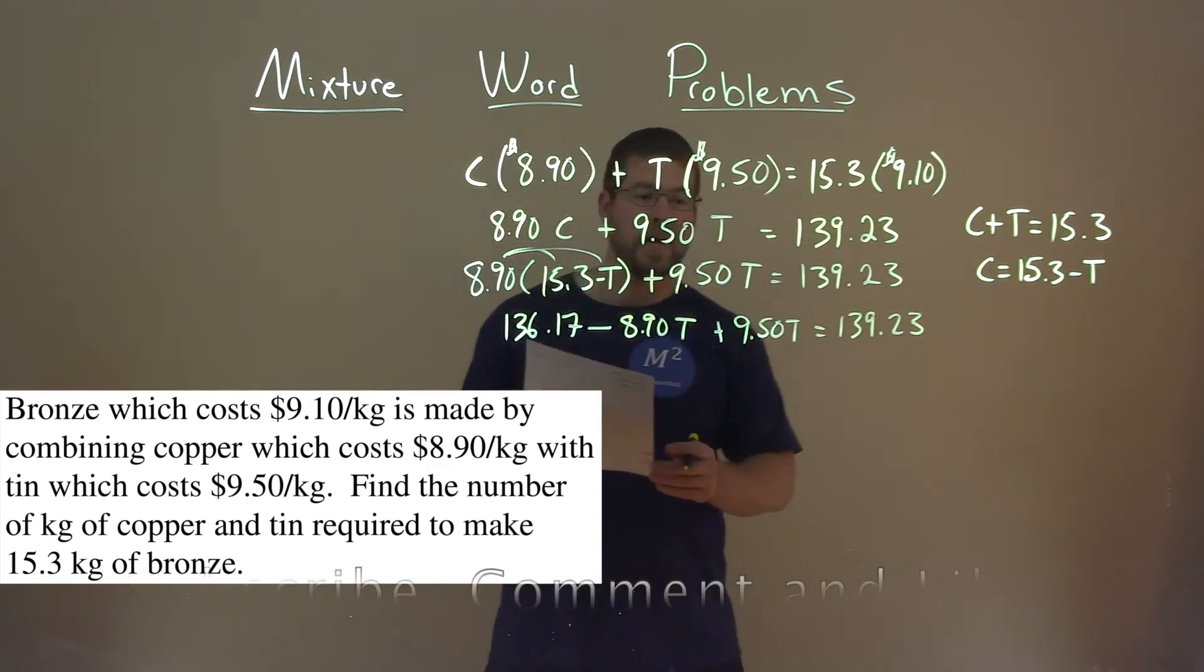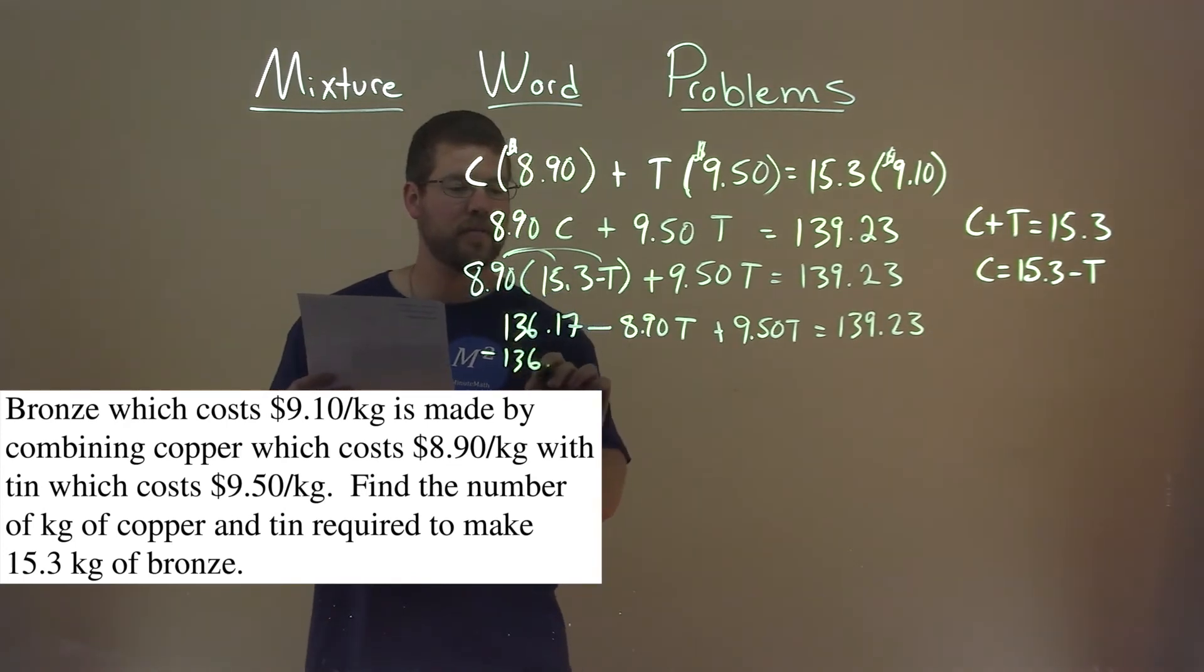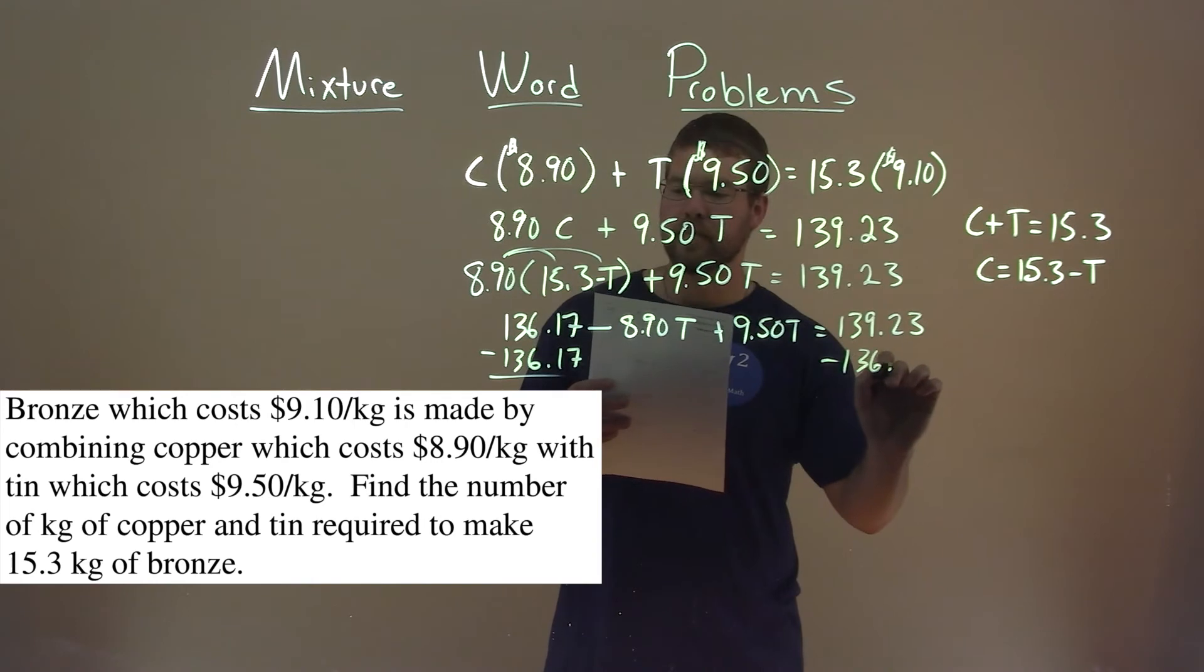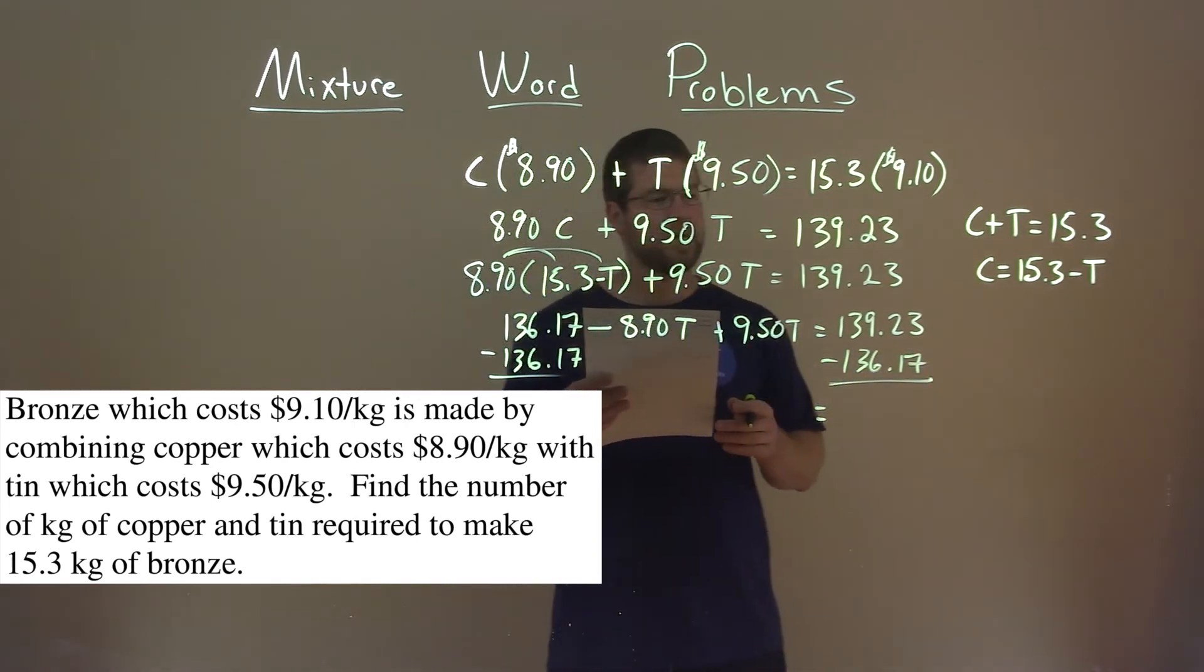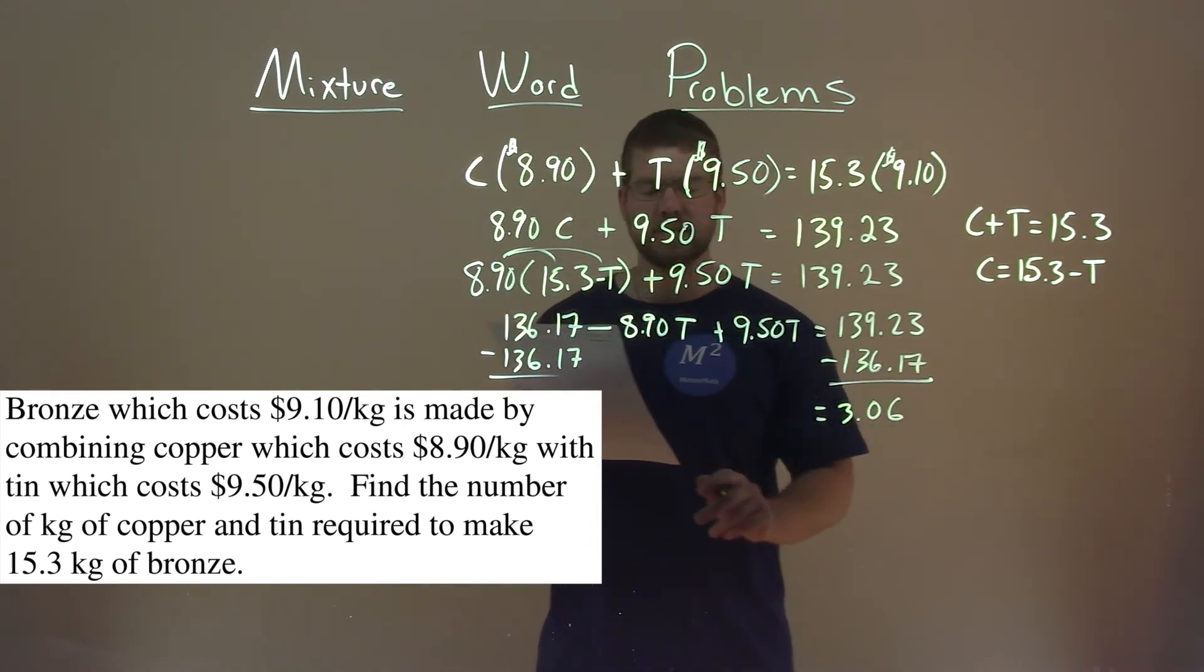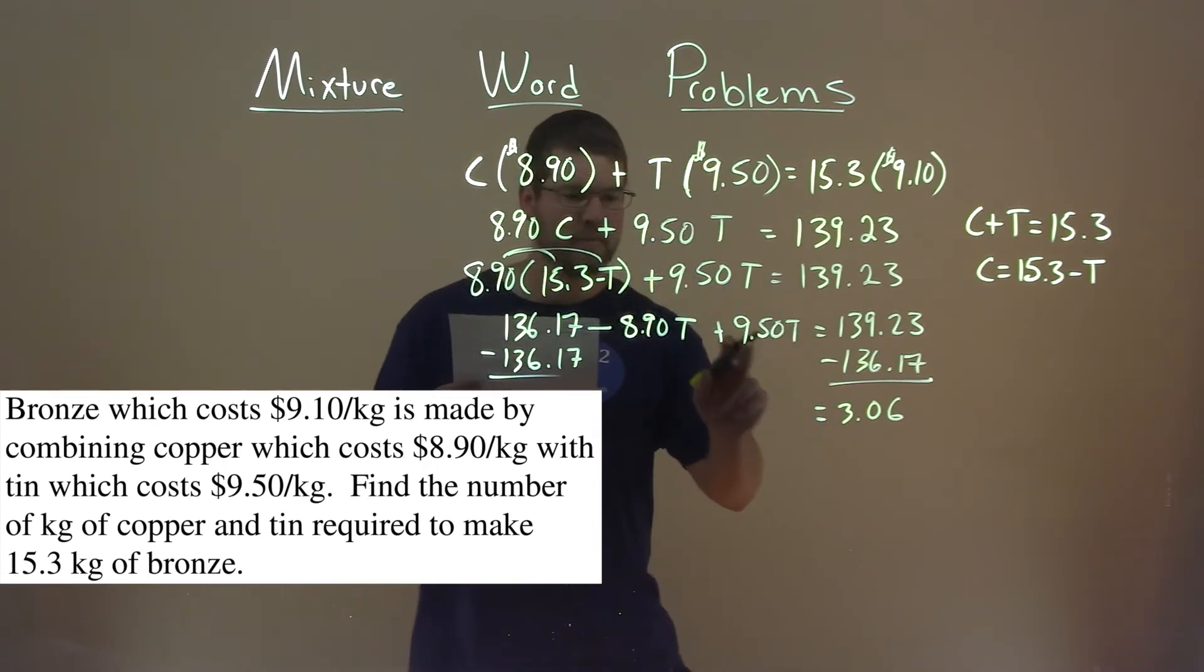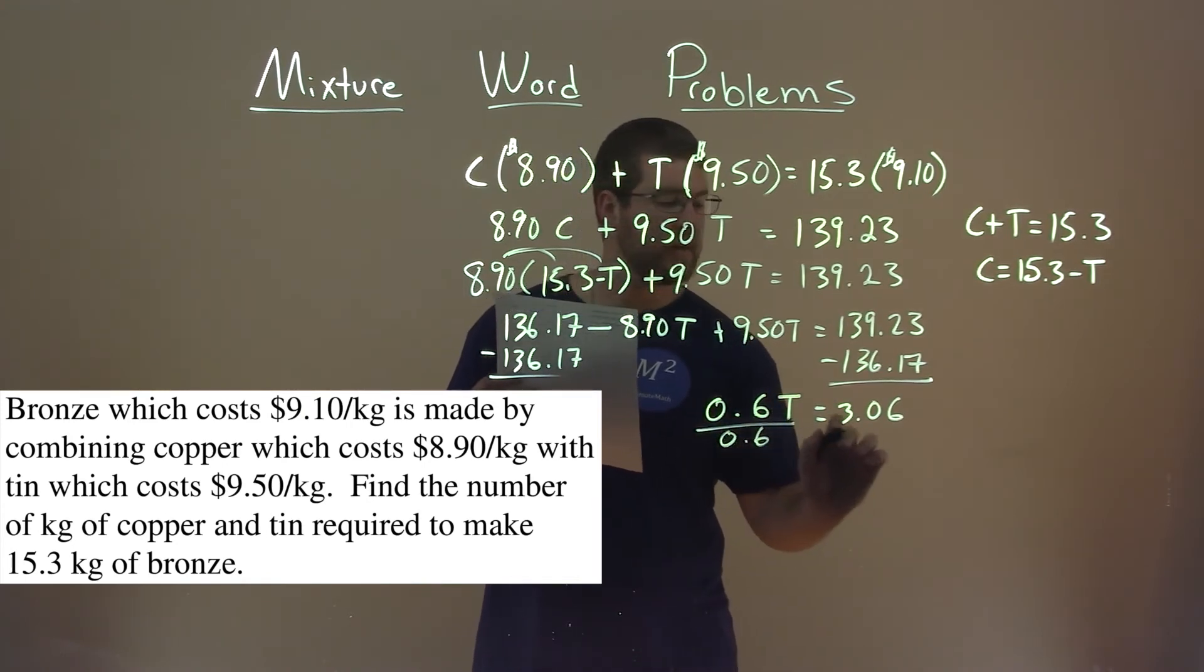Alright, so now we have to keep going. Let's combine our like terms. I'm going to subtract the 136.17 here to both sides. And on the right side, 139.23 minus 136.17 is 3.06. Negative 8.90 plus 9.50 with the variable T is 0.6 T.